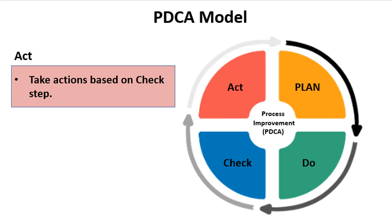During the Act step, the knowledge gained during the Check step is acted on. So if the plan and implementation worked, the team institutionalizes the process improvement throughout the organization.